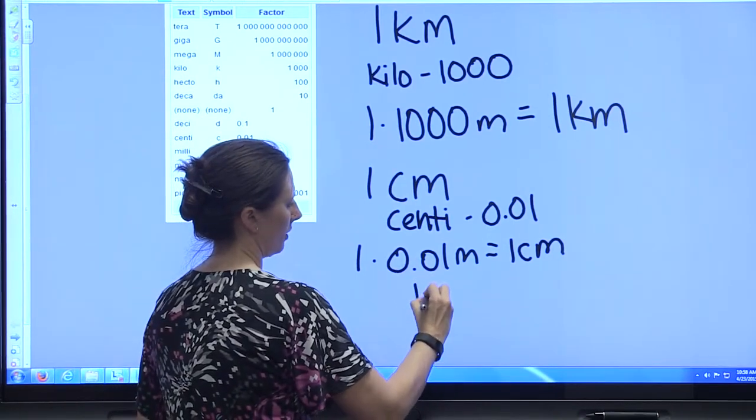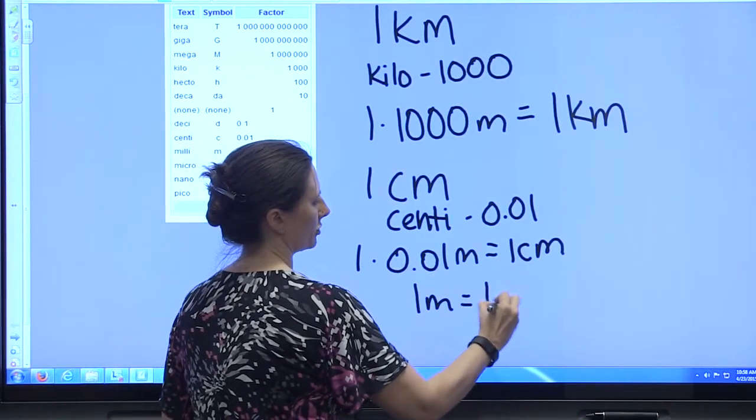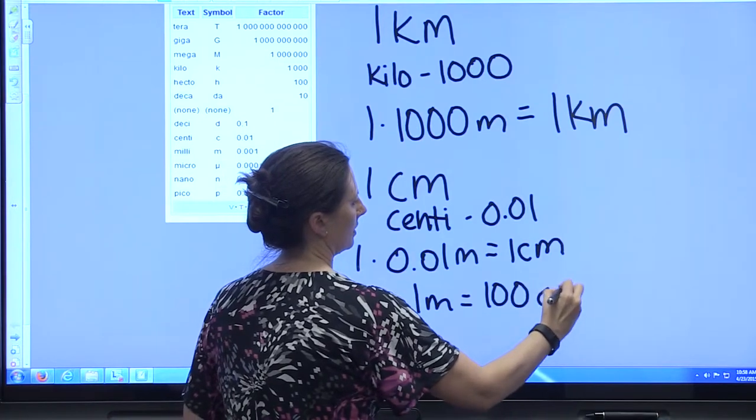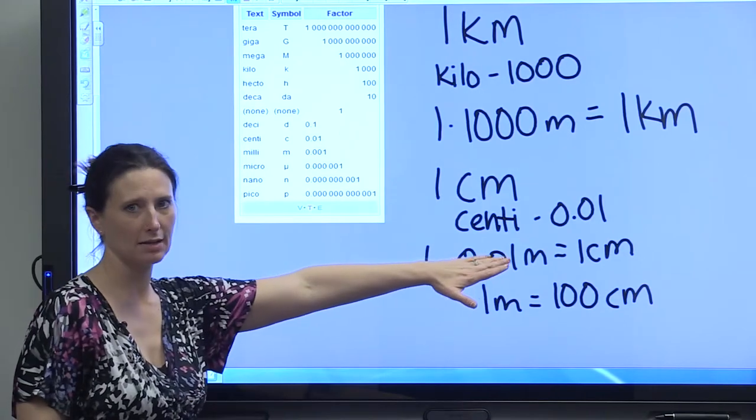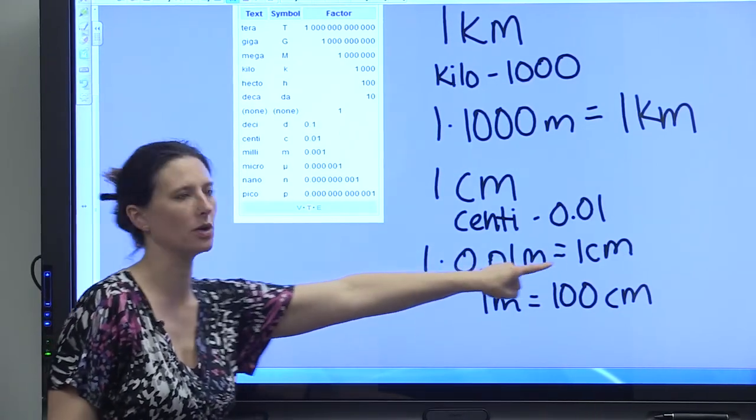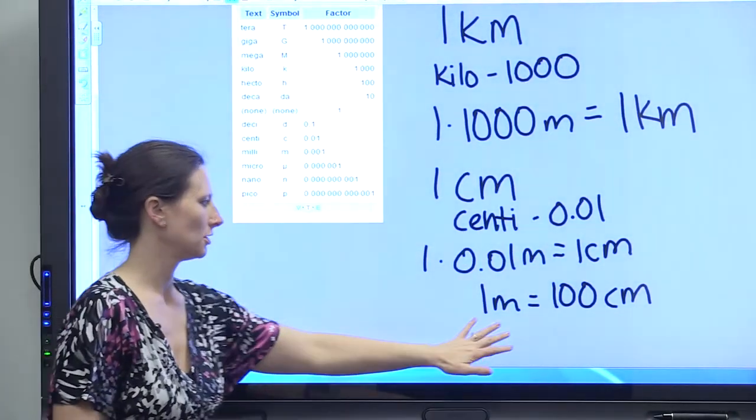That means you have a hundred centimeters, because if you divide both sides by 0.01 you'll get one hundred centimeters.